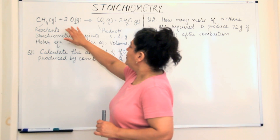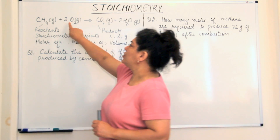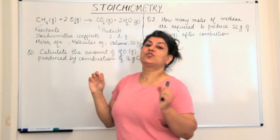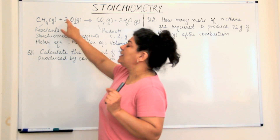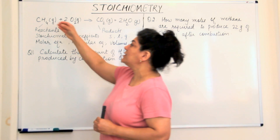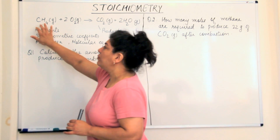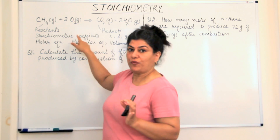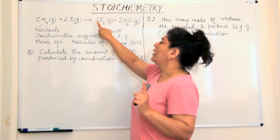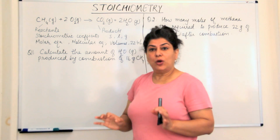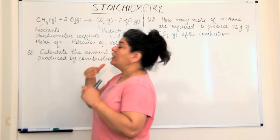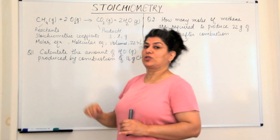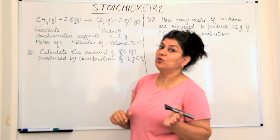When you look at a balanced chemical equation, you have these numbers before every formula of the reactant or product. This number is known as the stoichiometric coefficient, and it tells you the number of molecules. For example, one molecule of methane combines with two molecules of oxygen — two being the stoichiometric coefficient — to produce one molecule of carbon dioxide and two molecules of water. If you assume these to be moles instead, then one mole of methane combines with two moles of oxygen to produce one mole of carbon dioxide and two moles of water.